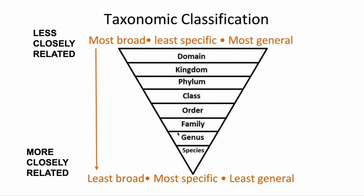So again, as you can see, we start with domain, then kingdom, phylum, class, order, family, genus, species. Domain is the most broad, and species is the least broad. You should have a sheet with some of this information that you can use to help you work through these questions.